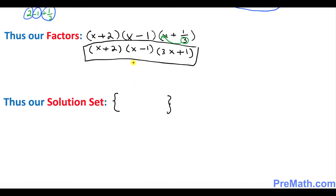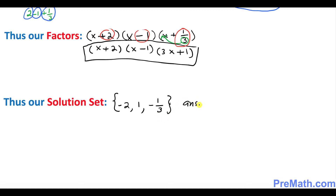Finally, our solution set is found by simply looking at the numbers in the factors and switching their signs. So positive 2 becomes negative 2, negative 1 becomes positive 1, and positive 1 over 3 becomes negative 1 over 3. That is our answer.